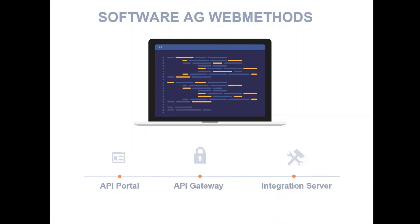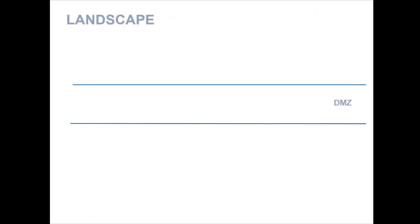Let's have a look at the overall landscape of the different products. Initially there is going to be a DMZ followed by an internal zone. Now let's look at how each and every component is going to be placed in their respective zones.